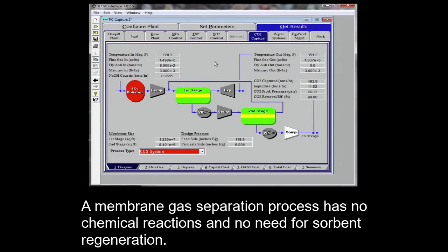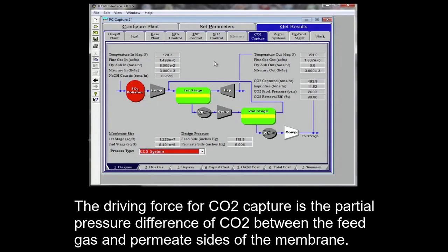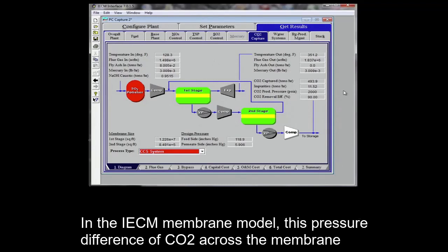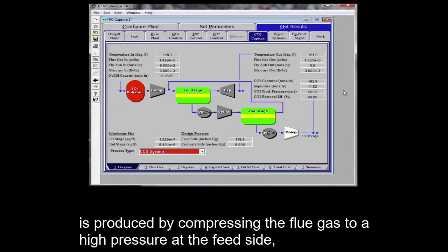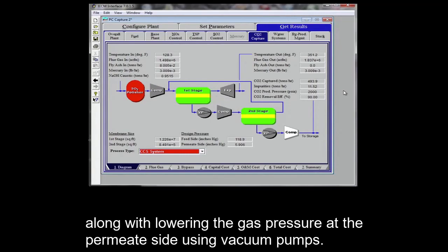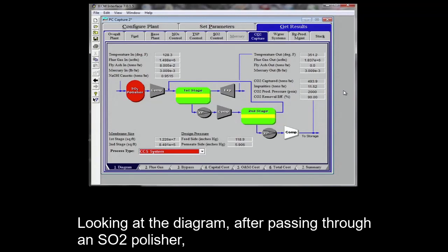A membrane gas separation process has no chemical reactions and no need for sorbent regeneration. The driving force for CO2 capture is the partial pressure difference of CO2 between the feed gas and permeate sides of the membrane. In the IECM membrane model, this pressure difference of CO2 across the membrane is produced by compressing the flue gas to a high pressure at the feed side, along with lowering the gas pressure at the permeate side using vacuum pumps.